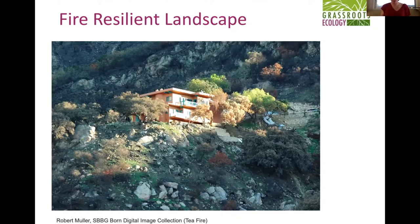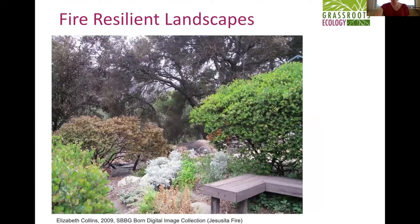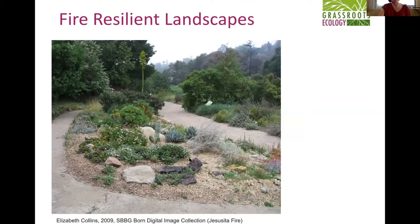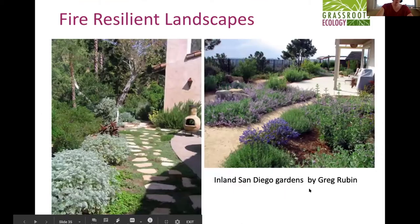Here's a picture of Santa Barbara Botanic Garden after a fire — a manzanita garden where the fire skimmed over this section, probably because boulders, rocks, and gravel pathways broke up the continuity. Another section — a succulent garden — survived very nicely with pathways surrounding it creating a break in the landscape. Succulents just don't burn as much. These inspiring gardens designed by Greg Rubin in inland San Diego have been found to be really resilient to fire.